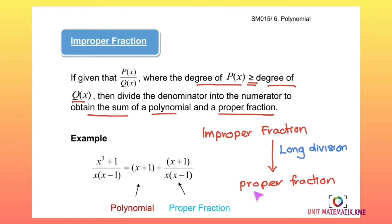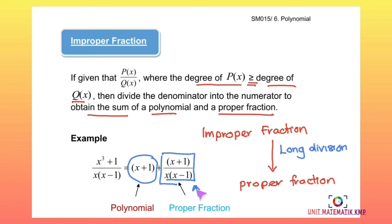If we are given an improper fraction, we do long division to obtain a proper fraction. The result of the long division gives the sum of a polynomial plus a proper fraction. We then continue with partial fractions because the remainder is already a proper fraction.